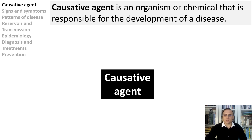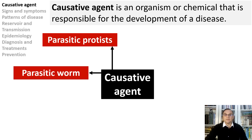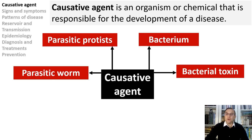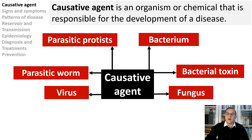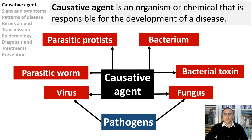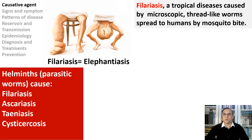A causative agent is an organism or a chemical that is responsible for development of a disease. A causative agent usually refers to a biological pathogen or toxin that causes a disease. It could be a parasitic protist or parasitic worm, it could be a bacterium or bacterial toxin, it could be a fungus or a virus. Parasitic worms cause filariasis, the common name of which is elephantiasis. The adult filarial worms are parasites that live in the human lymph vessels, where they mate and produce millions of microscopic worms, also known as microfilariae.